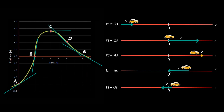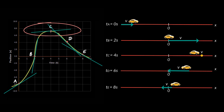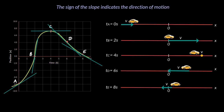At point C, or t = 4 seconds, where the velocity is 0, after this time the slope turns negative. This means that till point C, the object was moving in the positive x direction, but at t = 4 seconds it stopped momentarily, and after t = 4 seconds it started moving in the negative x direction. The sign of the slope indicates the direction of motion: a negative slope on an x versus t graph means the particle is moving in minus x direction, and a positive slope indicates positive x direction.